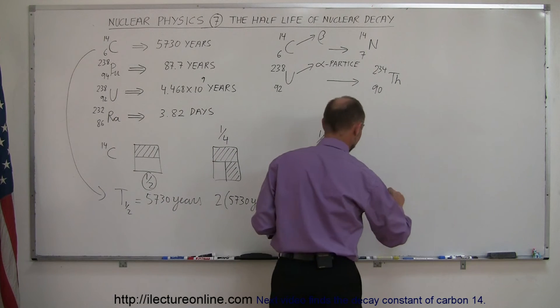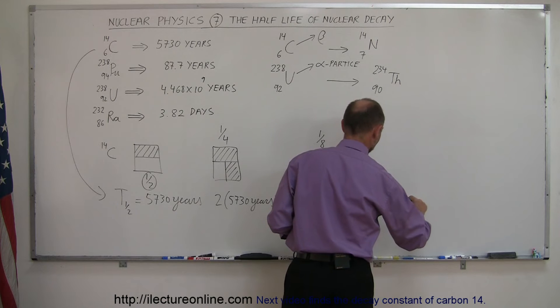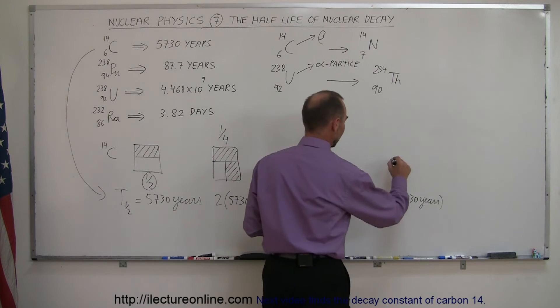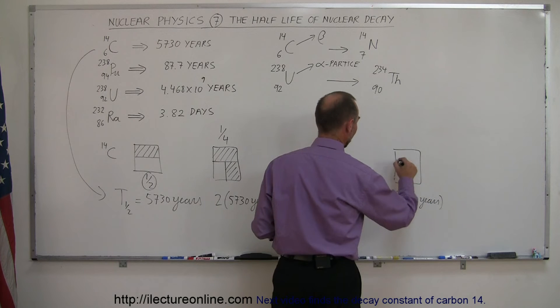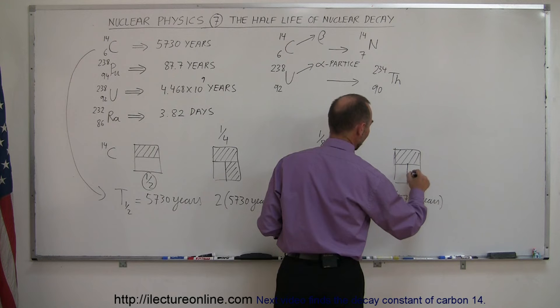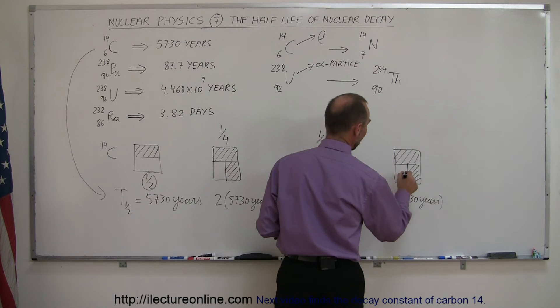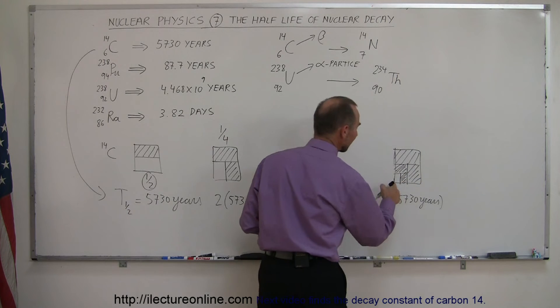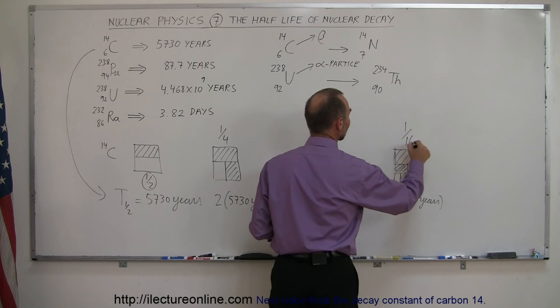And after another half-life, after four times 5730 years, now half of that will be gone. So after the first half-life, half will have decayed. After the second half-life, half of what was remaining. After the third half-life, this will have decayed. And finally, after another half-life, this will have decayed, and now you're only left with one-sixteenth.